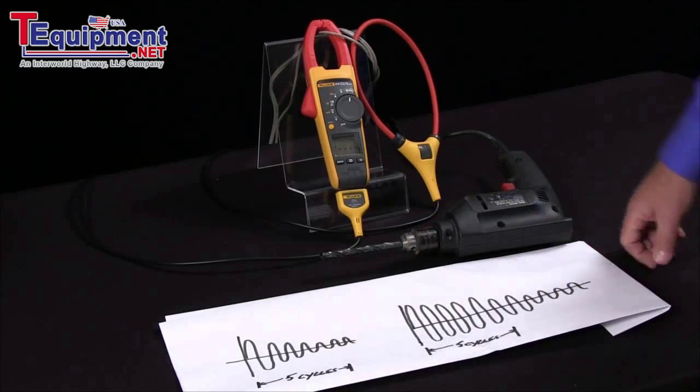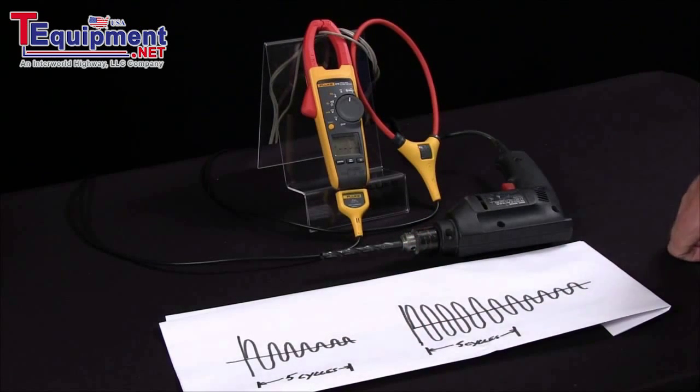That is how we measure inrush current with the Fluke 375 or 376 current clamp.